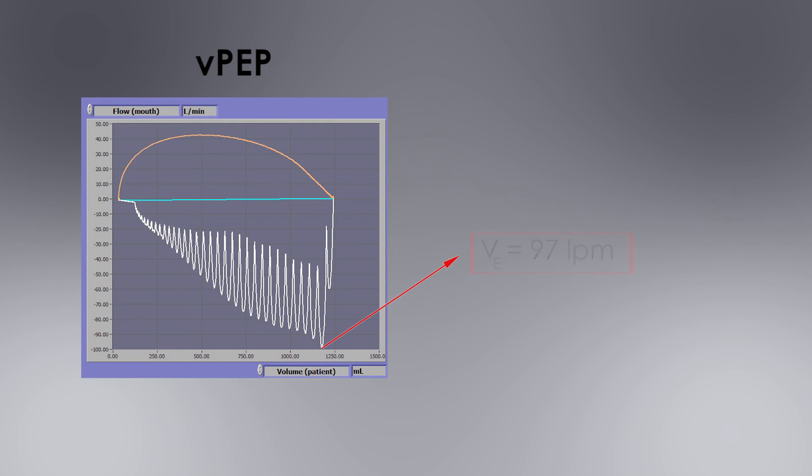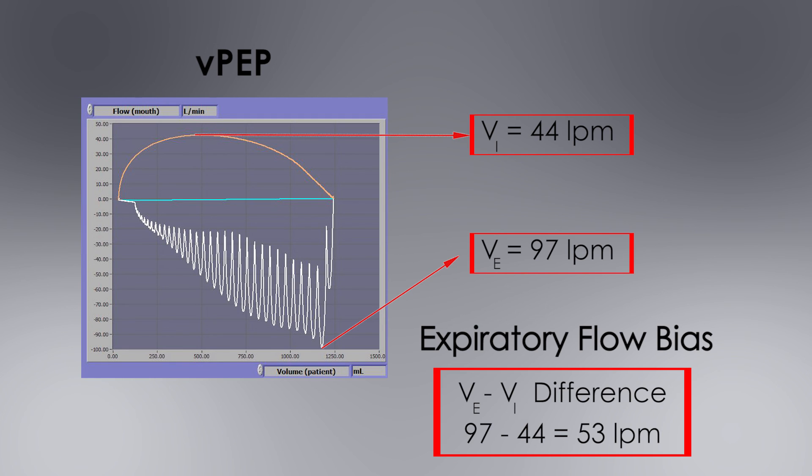The peak expiratory flow is 97 liters per minute. The peak inspiratory flow is 44 liters per minute. So the difference is 53 liters per minute.